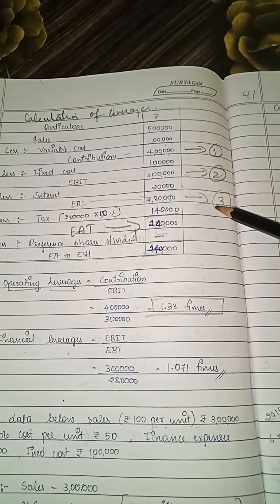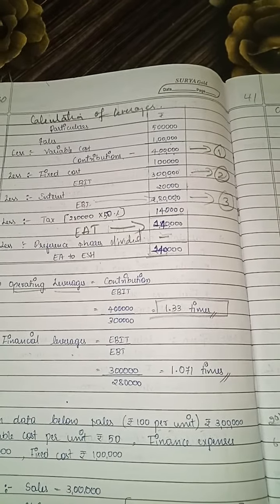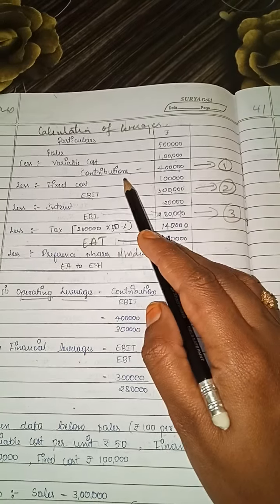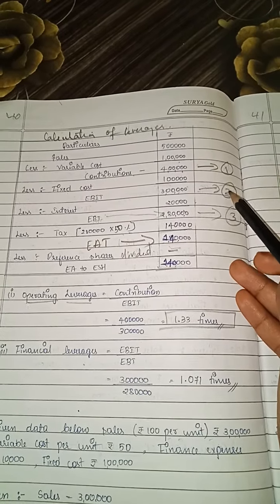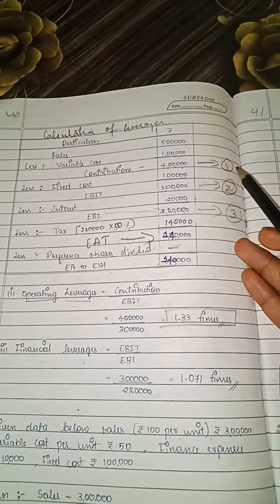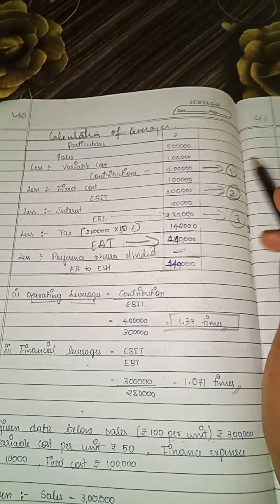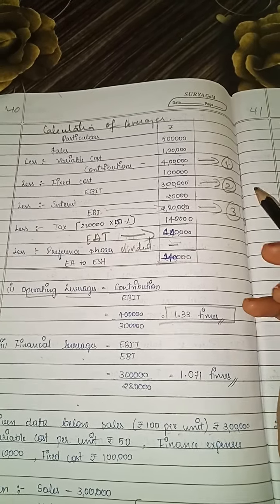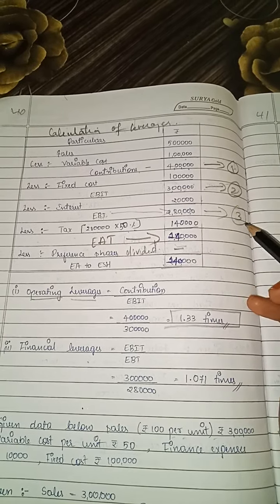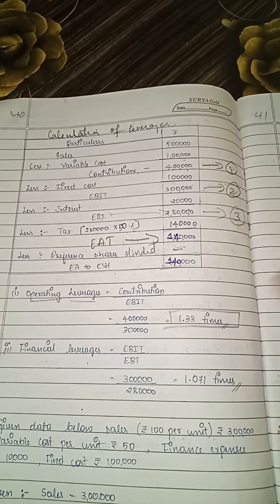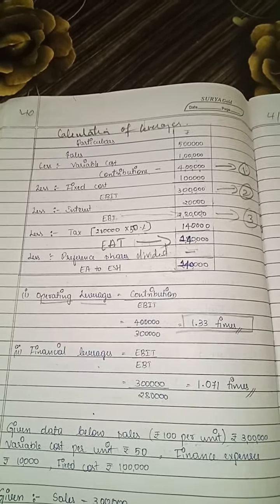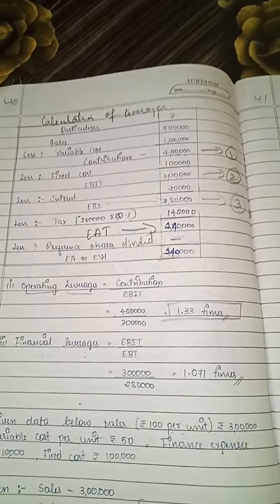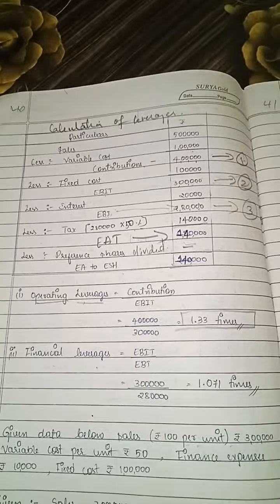Now for the leverage formulas — as a memory aid: operating leverage is contribution divided by EBIT, that is the first balancing figure divided by the second balancing figure. Financial leverage is EBIT divided by EBT, that is the second balancing figure divided by the third balancing figure. Multiplying OL into FL gives you combined leverage.